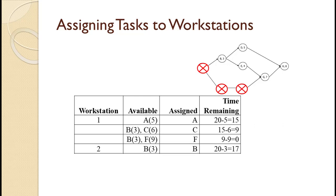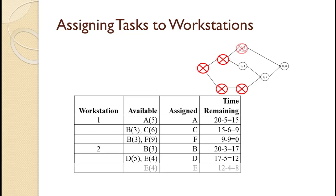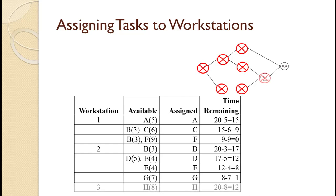With F assigned, only B can be assigned, so we assign it, leaving 20 minus 3 equals 17 seconds. With B assigned, D and E can be assigned. D has the longest task time, so we assign it, leaving 17 minus 5 equals 12 seconds. With D assigned, only E can be assigned, leaving 12 minus 4 equals 8 seconds. With E assigned, only G can be assigned, leaving 8 minus 1 equals 1 second, so we move to the next workstation. The last remaining task is H and it is assigned to workstation 3, leaving 20 minus 8 equals 12 seconds.